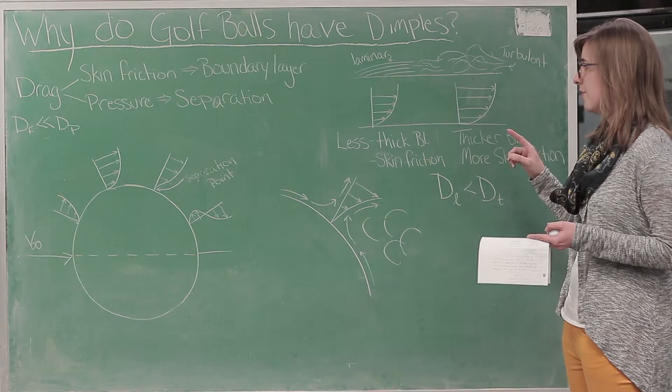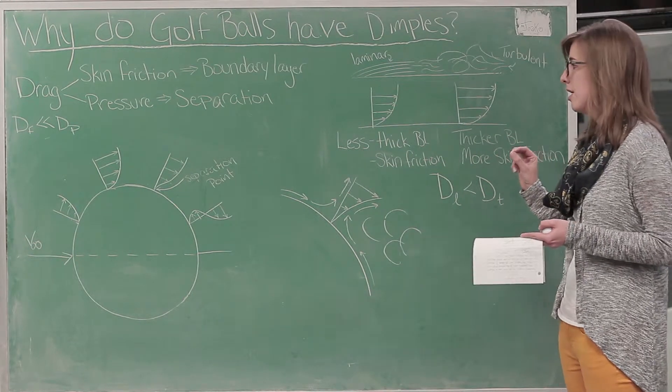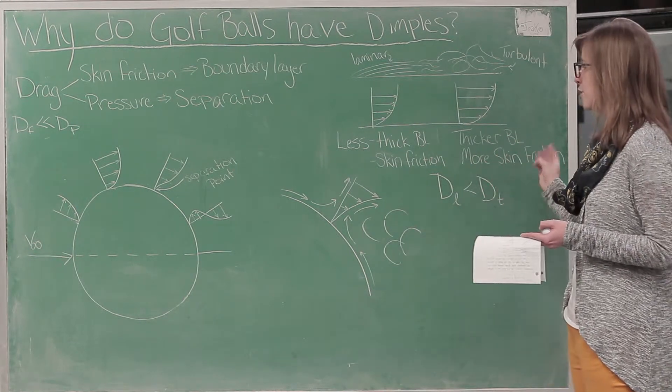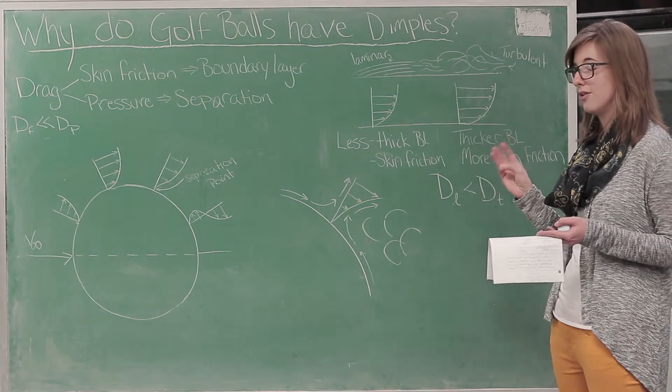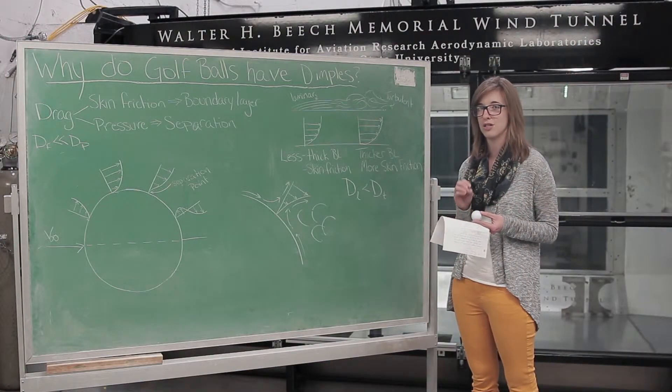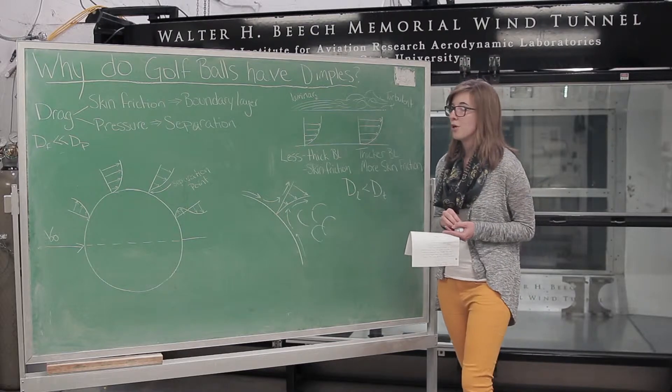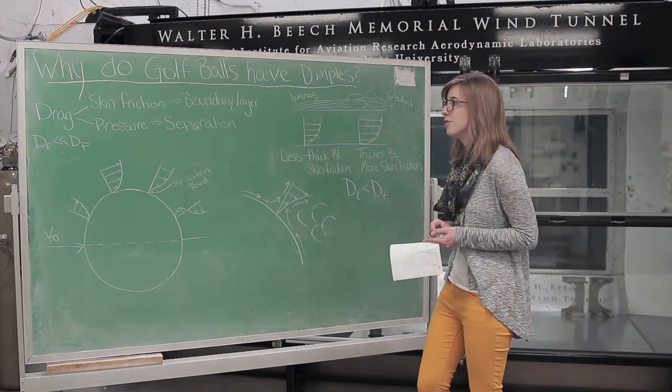Laminar flow has a thinner boundary layer and less skin friction than turbulent, but turbulent flow is more likely to hold on to that ball and surface as long as it can, which is important when we go to pressure drag.